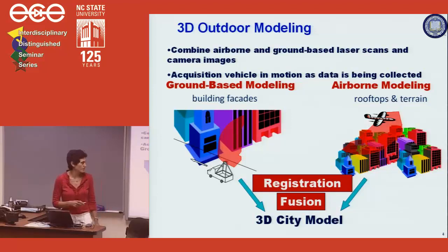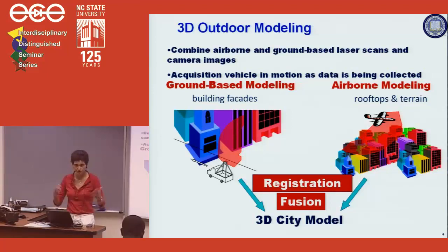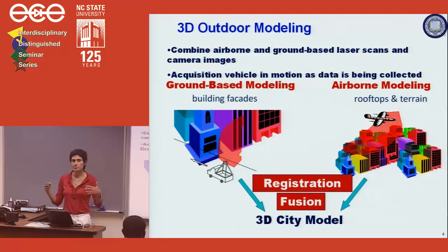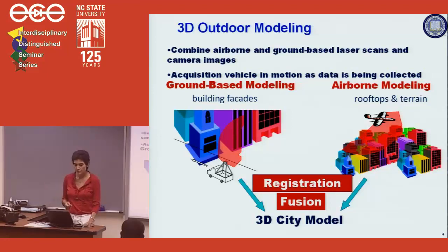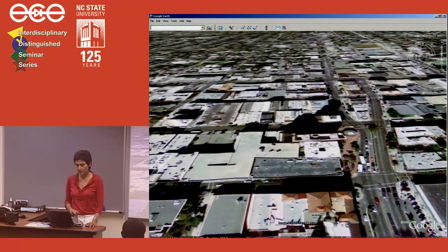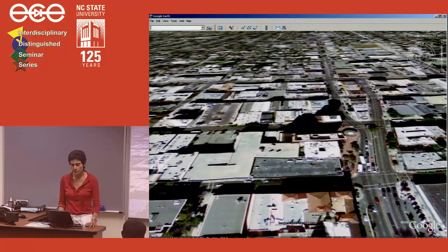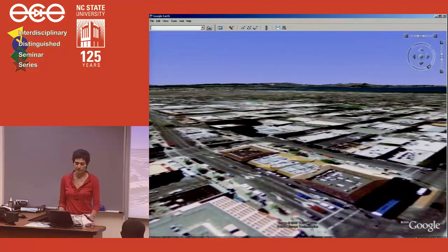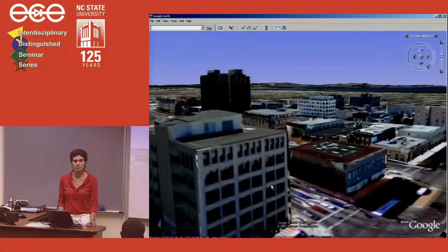The basic idea was to drive around a truck equipped with laser scanners, cameras, and other sensors under normal traffic conditions on the streets of Berkeley. Using those sensors, we automatically built a ground-based model, then flew helicopters and airplanes to collect aerial laser data and aerial pictures in two different runs to build an aerial model. We then registered and fused the ground-based model and the aerial model together to come up with a 3D city model. Here's Google Earth looking at downtown Berkeley — it's flat. After we insert our 3D models, it looks like this.